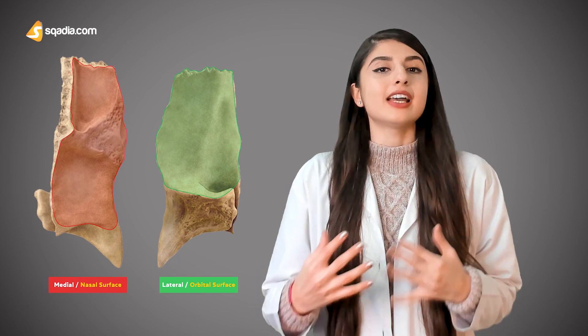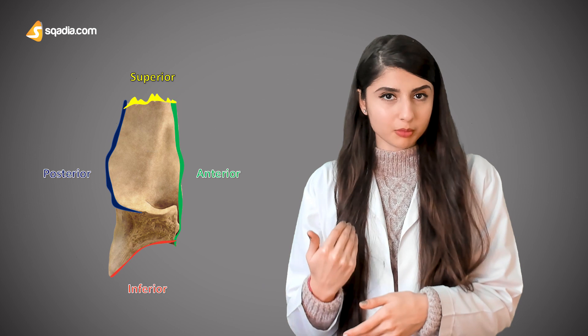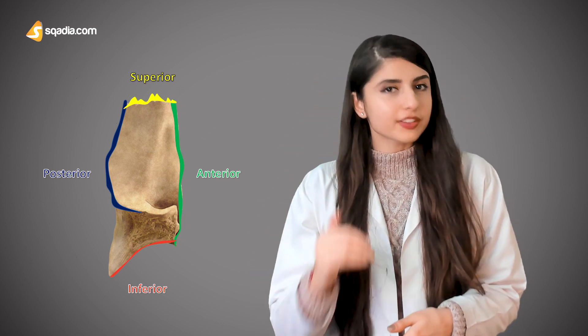Now let's head on to the next section to learn about the little details of this small bone, and see all the anatomical features — the surfaces and the borders. It only has two surfaces and four borders. The two surfaces are the medial and lateral surface, and the four borders are the anterior and posterior border, and the superior and inferior border.